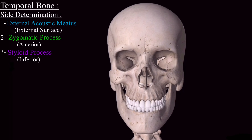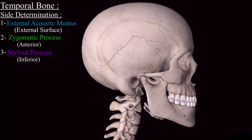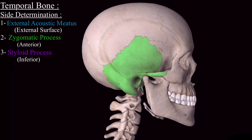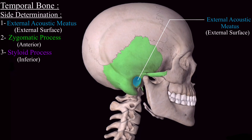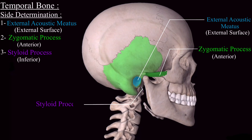Now looking at the right temporal bone: the external acoustic meatus is on the external surface, the zygomatic process is directed anteriorly, and the styloid process is pointed downward. So this is the right temporal bone.